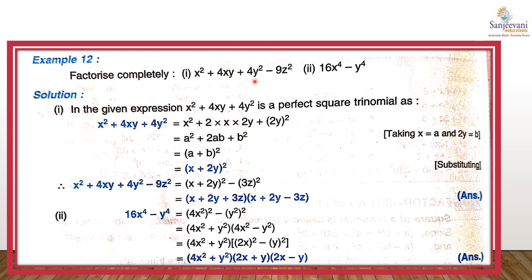Next example: x² + 4xy + 4y² - 9z². Looking at x² + 4xy + 4y², this is of the type a² + 2ab + b², so the factor is (x + 2y)². The remaining term is 9z² = (3z)². So the expression becomes (x + 2y)² - (3z)², which is a² - b² form. The final factors are (x + 2y + 3z)(x + 2y - 3z).